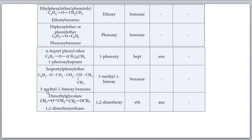For the next compound with five carbons and a methyl branch: numbering to give the oxygen the lowest number. Position 1 has the oxy group, and position 3 has the methyl group. The alkyl portion attached to oxygen has four carbons (butoxy). IUPAC name: 3-methyl-1-butoxybenzene.